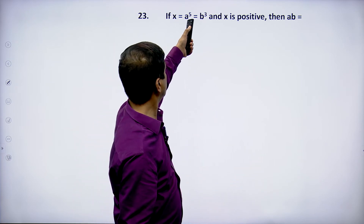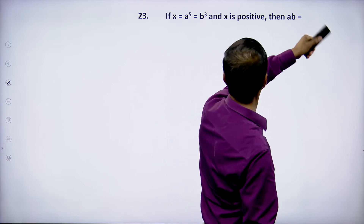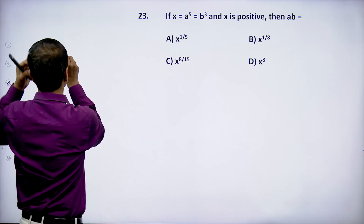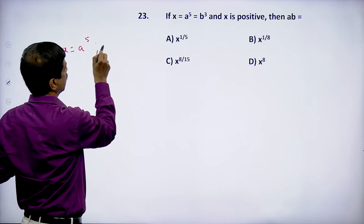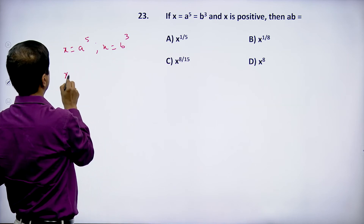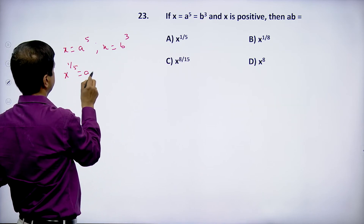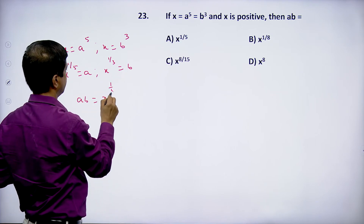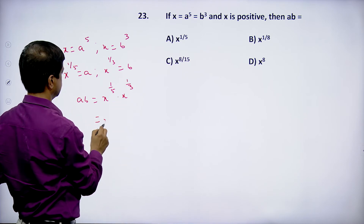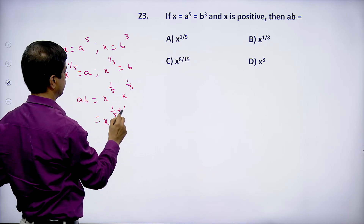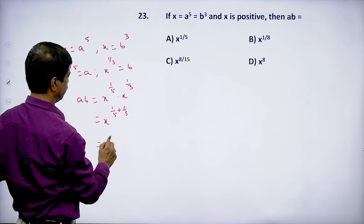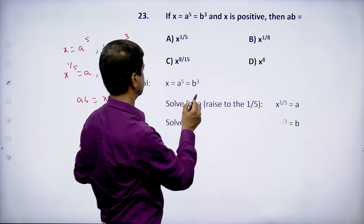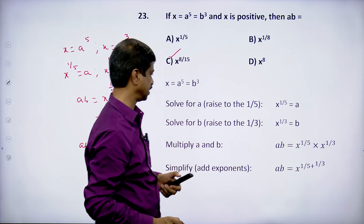If x = a^5 = b^3 and x is positive, find ab. From x = a^5: a = x^(1/5). From x = b^3: b = x^(1/3). So ab = x^(1/5) · x^(1/3) = x^(1/5 + 1/3). LCM of 5 and 3 is 15: 3 + 5 = 8, so ab = x^(8/15). Option C satisfies.